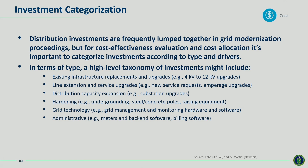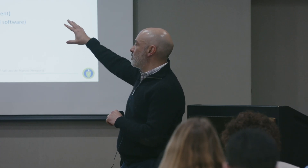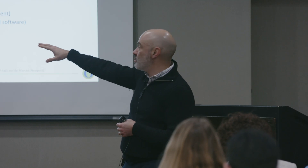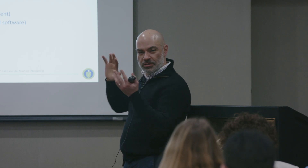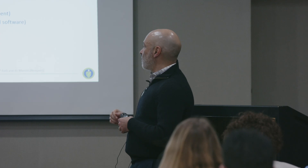Moving to investment categorization — what is the utility budget composed of? Distribution investments are often lumped together, but it's useful to break them out by type and drivers. We might think about existing infrastructure replacements such as 4kV upgrades, line extensions or service upgrades for new service requests, distribution capacity expansion or substation upgrades coming out of capacity planning, hardening such as undergrounding or raising equipment, grid technology covering CAPEX and OPEX, and administrative items.